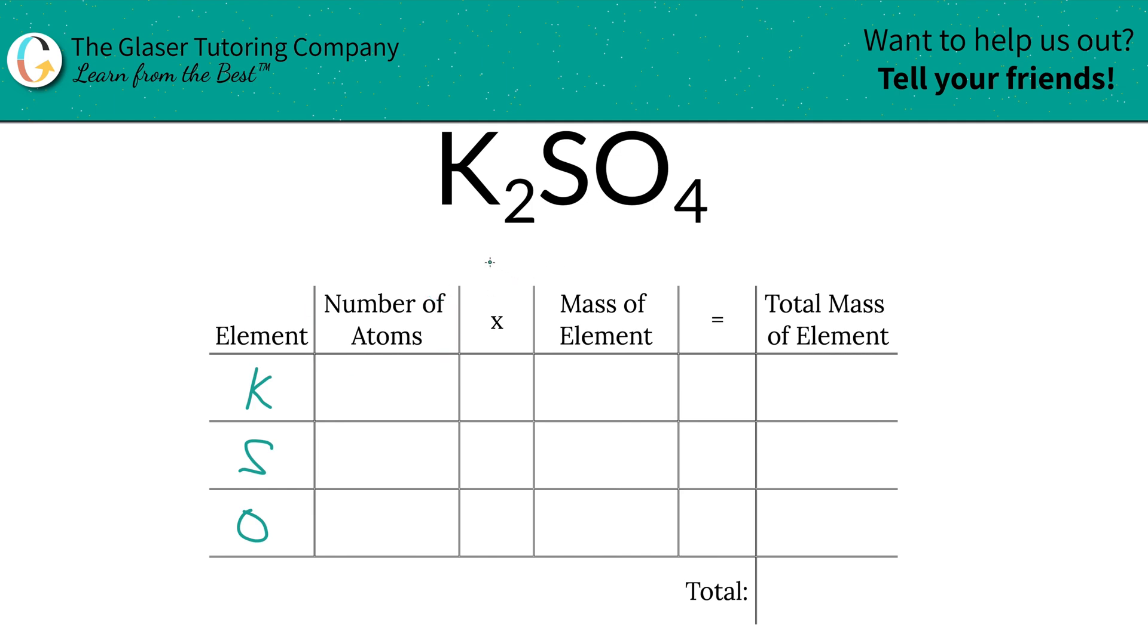Then we're going to identify the number of atoms. That's where the subscripts come into play. Now if you don't see a subscript at the bottom of one of your elements, just put in one. So there's two potassium, one sulfur, and four oxygen. Easy peasy.